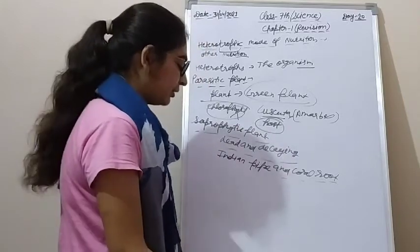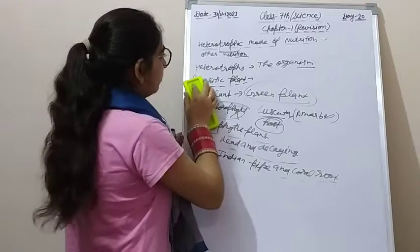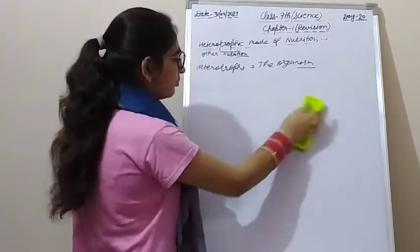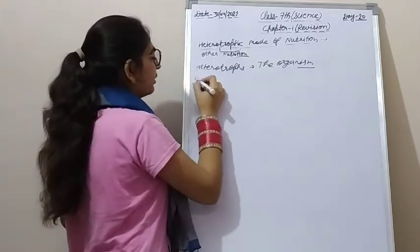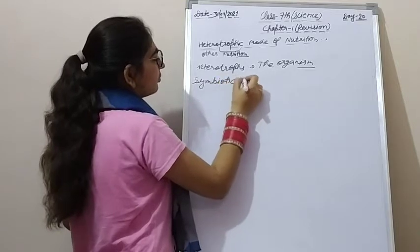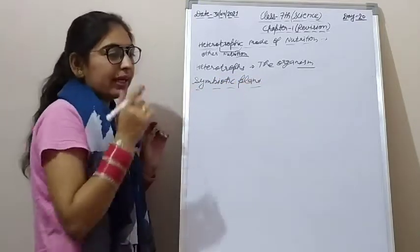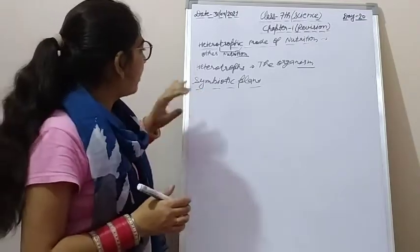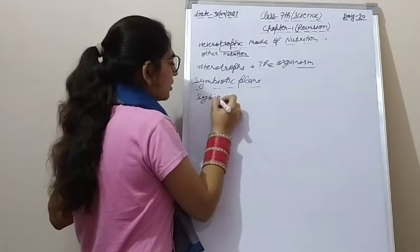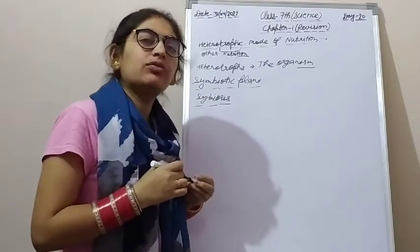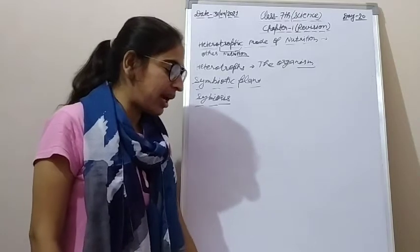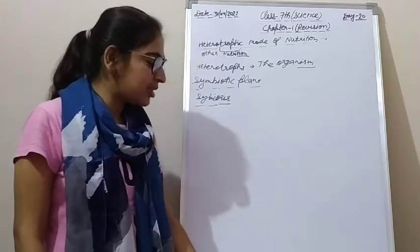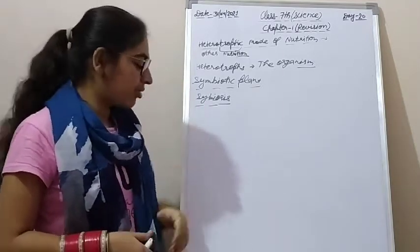Next we move on to symbiotic plants. Symbiosis is the relationship between two plants in which one plant provides shelter and the other provides food. When two organisms live in this mutual relationship, we call it symbiosis and we call such plants symbiotic plants.